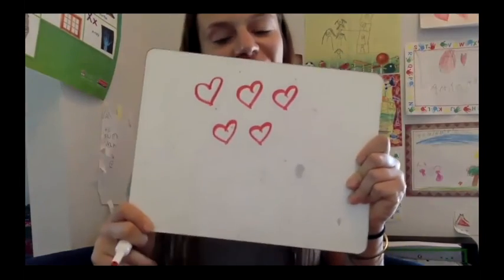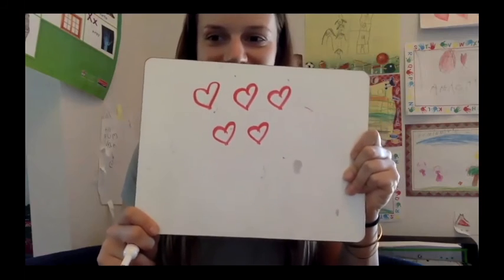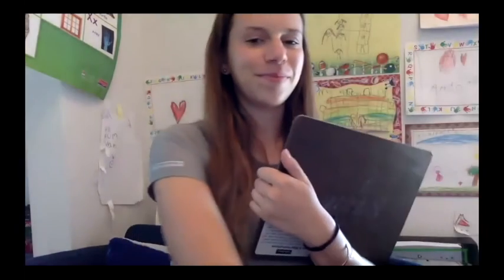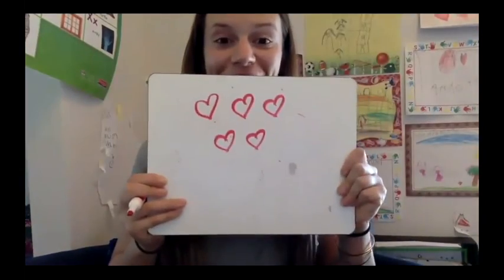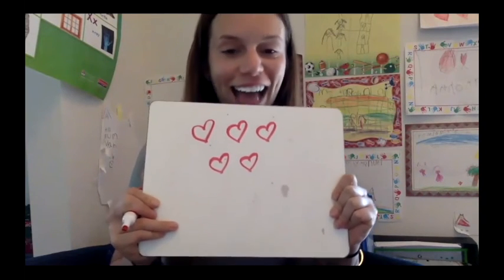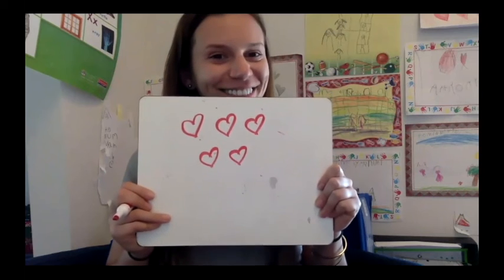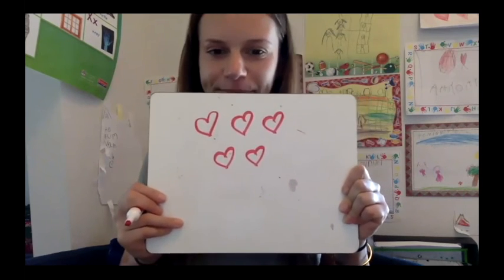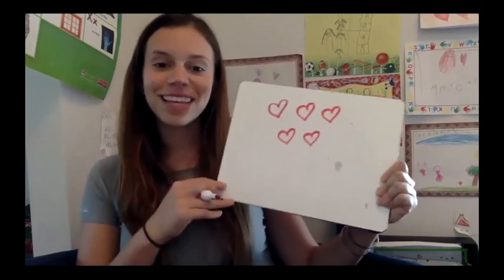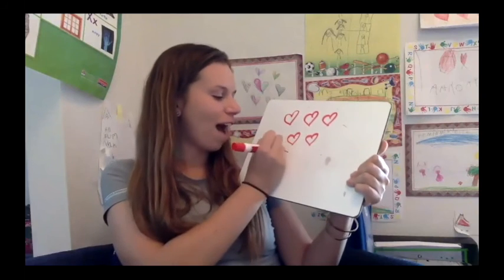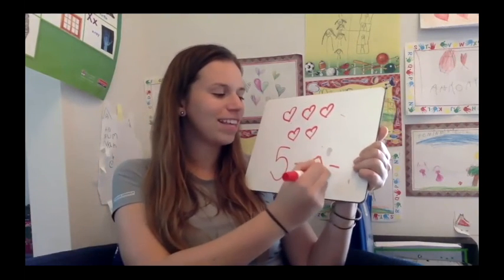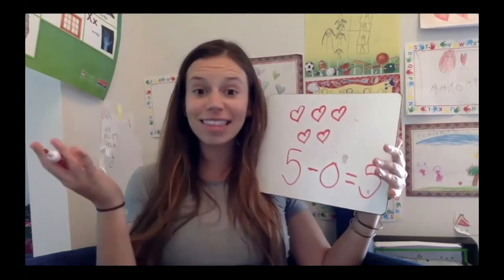And the last homework problem we'll do today is another erasing problem. How many hearts are there? Count them. Now I'm going to erase them. How many did I erase? Say 'Miss Minion, my answer is... and I know because...' This is a tricky one — can you write a number sentence to match? That's right, I took away zero. Five hearts take away zero equals five hearts left over. I took away nothing, so it didn't change.